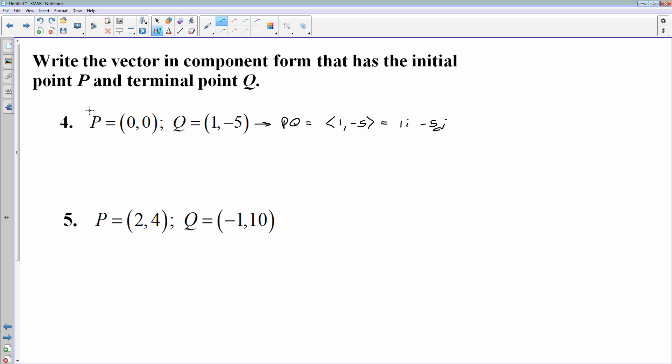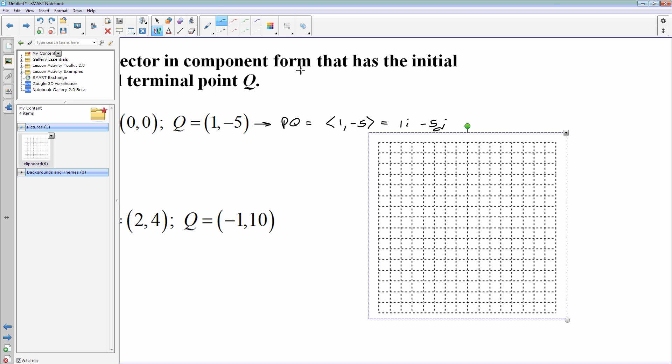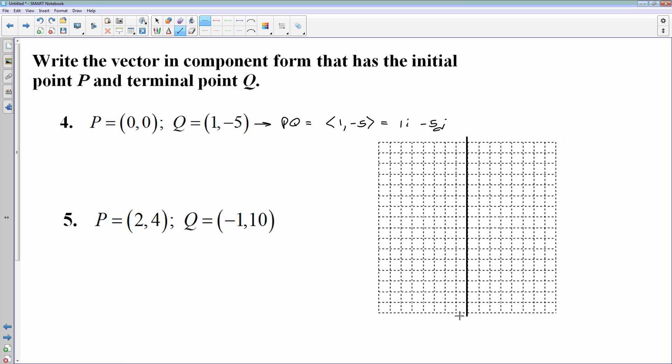I may show that by graphing for those of you who are not visualizing that very well. If you were to actually plot those two points, we have a y-axis, we have our x-axis. For number 1, we had point P at the origin and point Q at 1, 2, 3, 4, 5. And if you actually plot the two points, then it might be easier for you to see that we did go to the right one and we went down 5. So 1, negative 5.